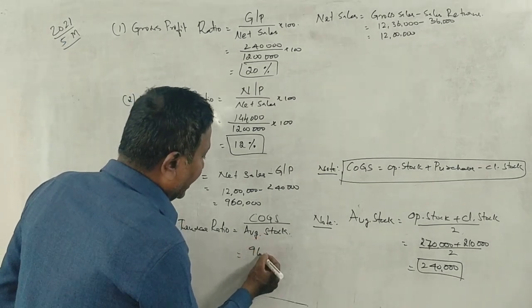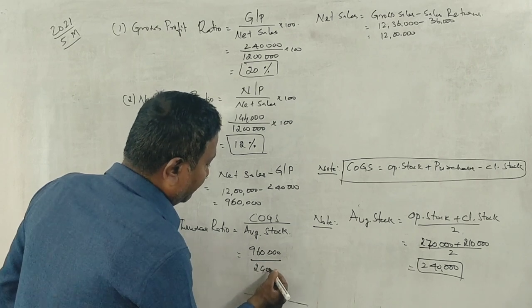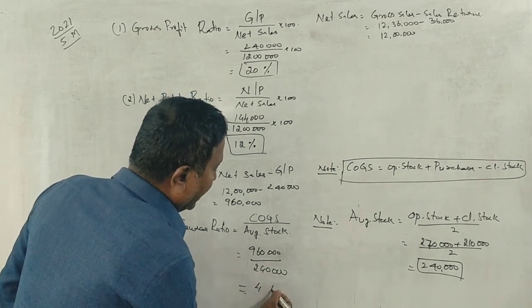Stock Turnover Ratio: Cost of Goods Sold 9,60,000 divided by Average Stock 2,40,000 equals 4 times.